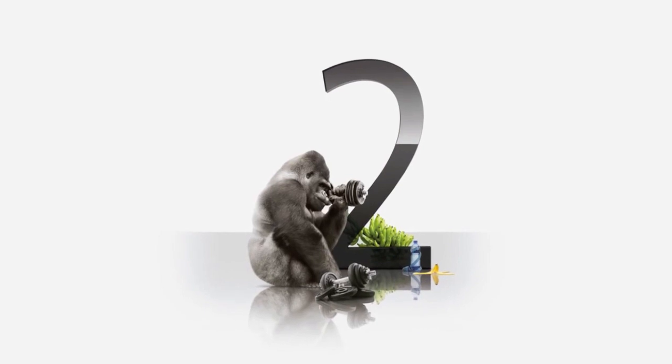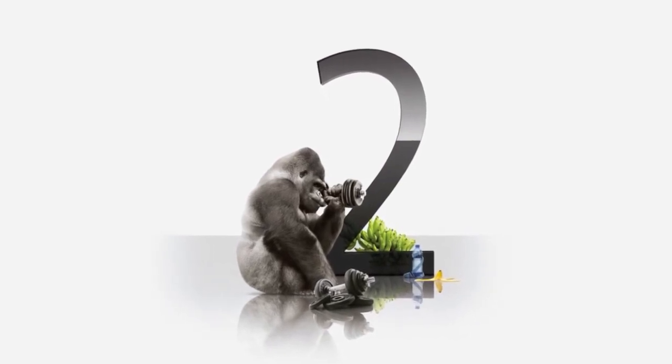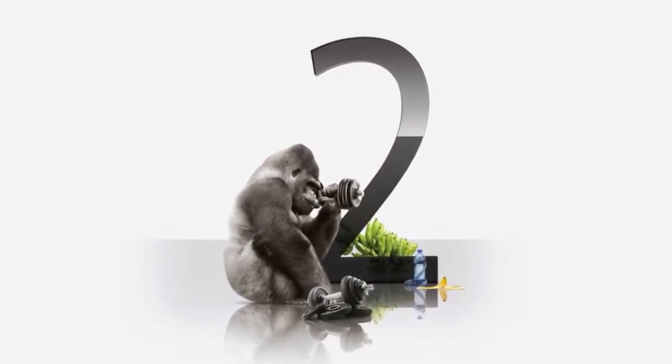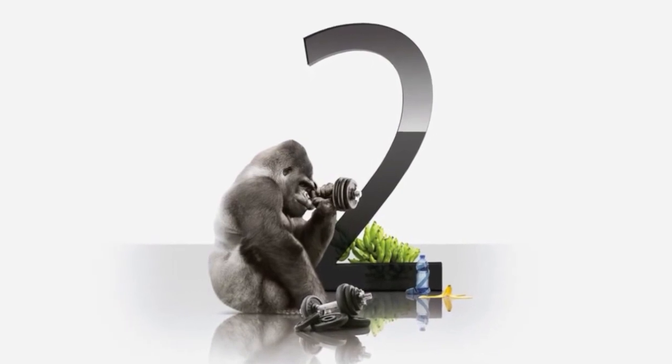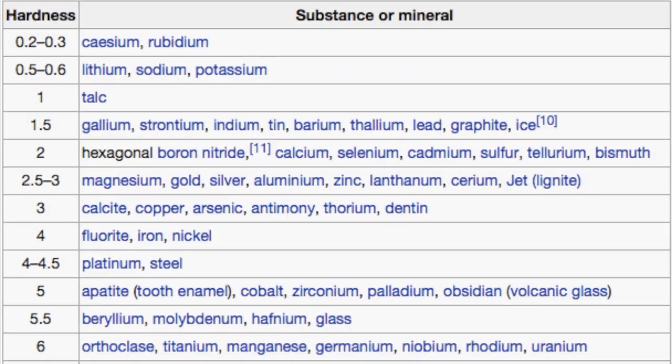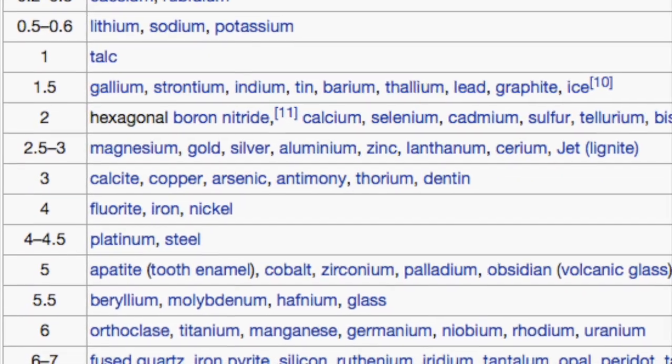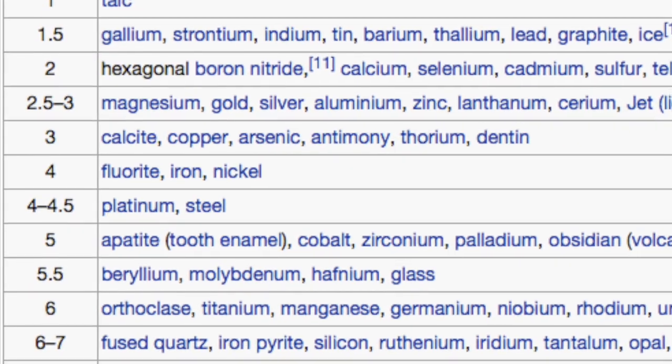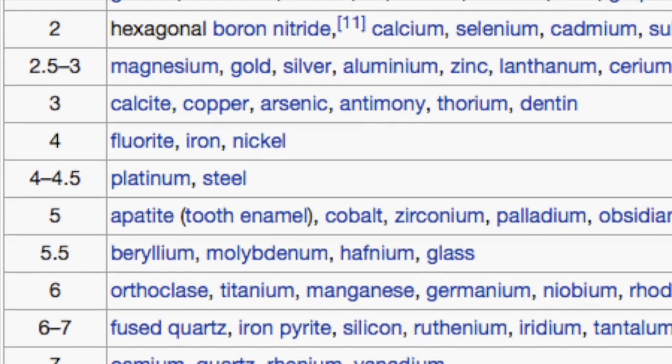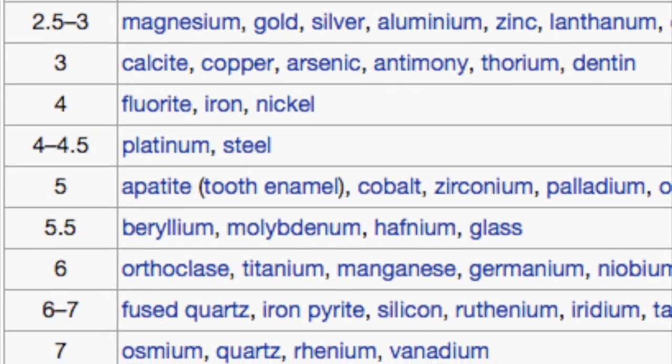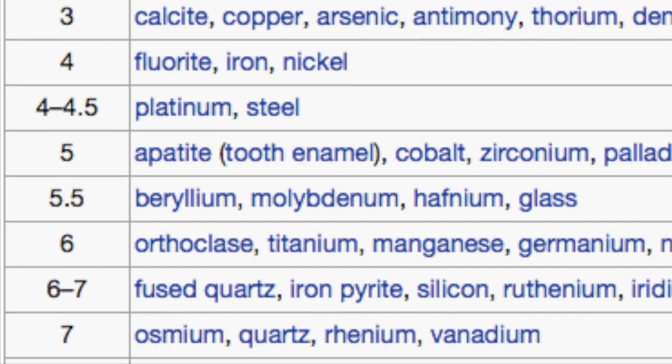First, let's talk about the Gorilla Glass, which has been used since iPhone 4. Compared to normal glass, it is much harder. The hardness of substance can be told through the Mohs scale of material hardness. We checked that the Mohs hardness for Gorilla Glass is 7.5, and we can find here the normal glass is 5.5.